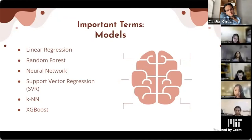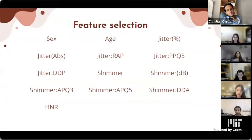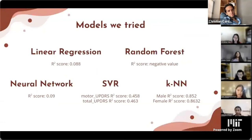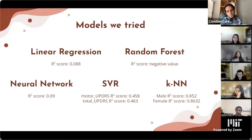There are still limitations to our model — it was only trained on people with Parkinson's, so the app won't properly calculate a UPDRS score for people without Parkinson's and won't serve as an unbiased diagnostic tool. For future work, we would suggest training the model on controls as well, and experimenting more with XGBoost parameters to increase R-squared scores even further.